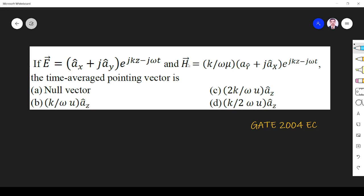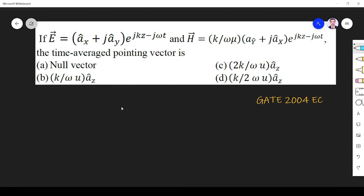So what is time averaged Poynting vector? Time averaged Poynting vector is equal to 1 by 2 real part of E cross H star. This we have to find.